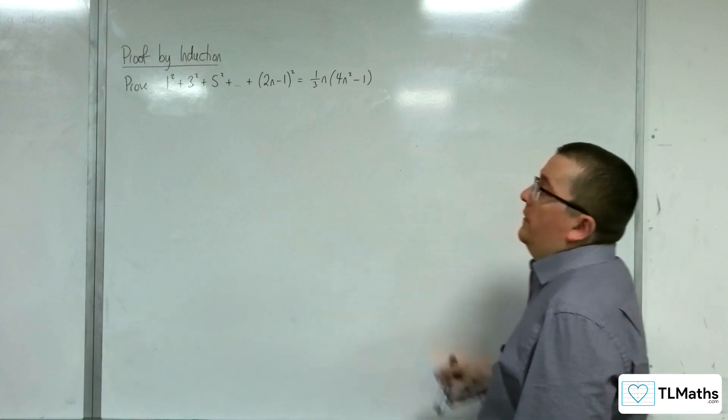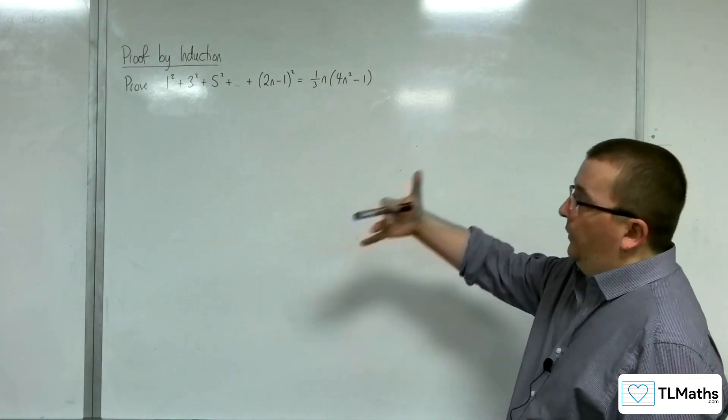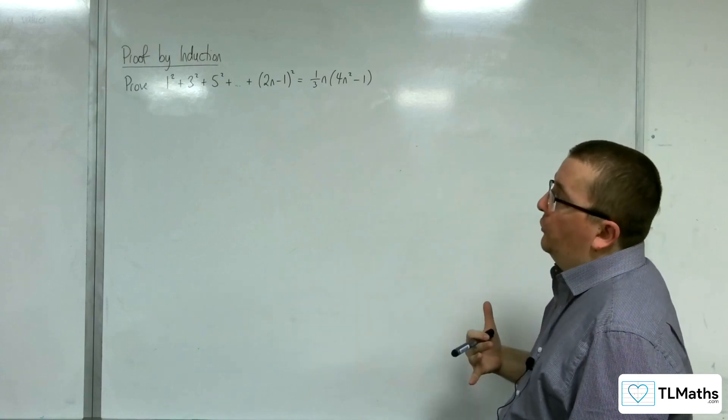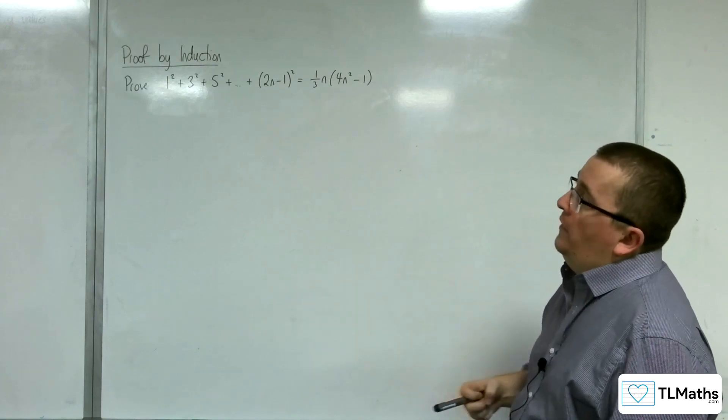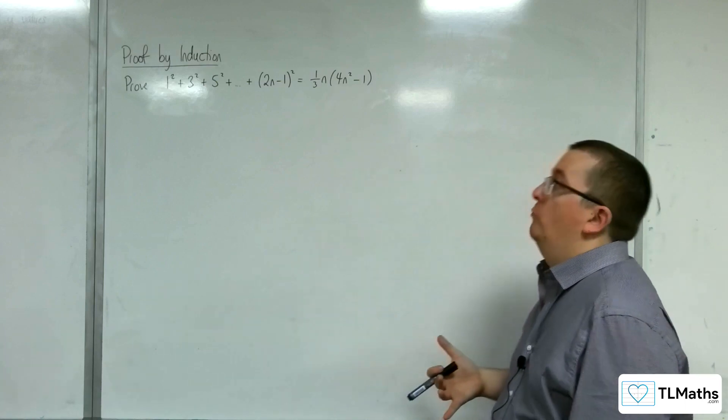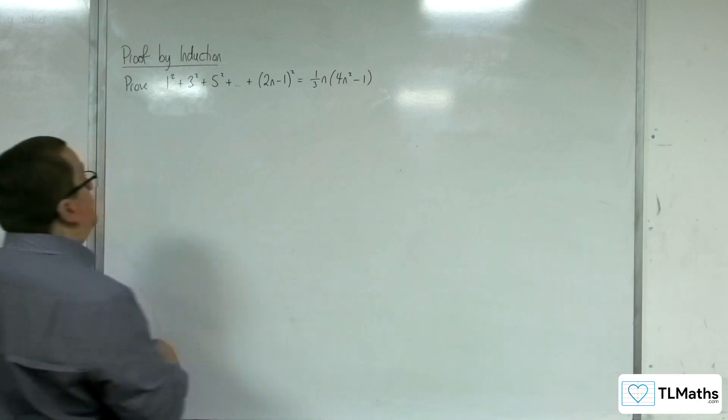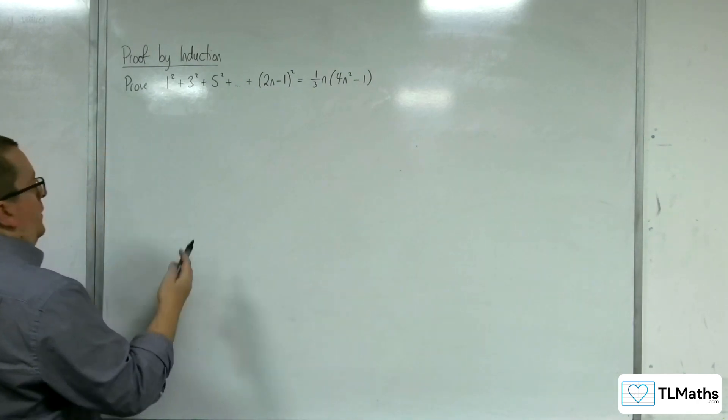In this video we're going to prove that 1 squared plus 3 squared plus 5 squared plus etc, which is nth term 2n minus 1 squared, is equal to 1 third n times 4n squared minus 1. So it is a summing of series problem, it's just presented without the sigma. OK, so step 1.